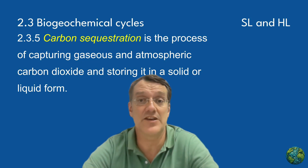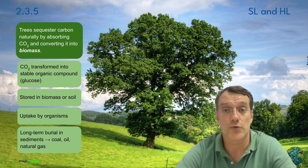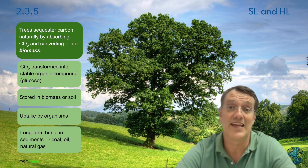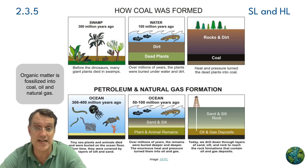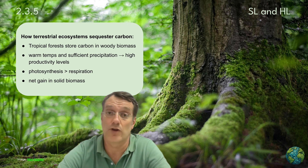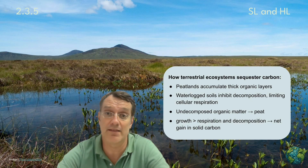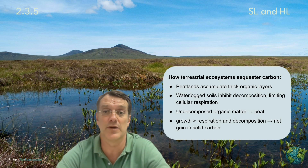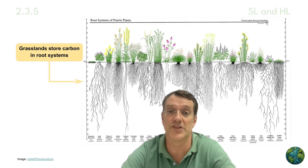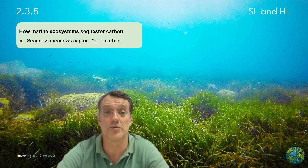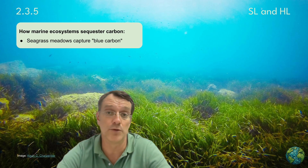Carbon sequestration is nature's way of capturing and storing atmospheric carbon dioxide. Trees are particularly effective at this, absorbing CO2 through photosynthesis and converting it into solid biomass. Over very long periods, this organic matter can become fossilized into coal, oil, and natural gas. Different ecosystems sequester carbon in different ways: tropical forests store carbon in woody biomass, peatlands accumulate thick layers of organic matter in waterlogged conditions, and grasslands store significant carbon in their extensive root systems. Marine ecosystems like mangroves, seagrass meadows, and coral reefs also play crucial roles in carbon sequestration, often referred to as blue carbon.